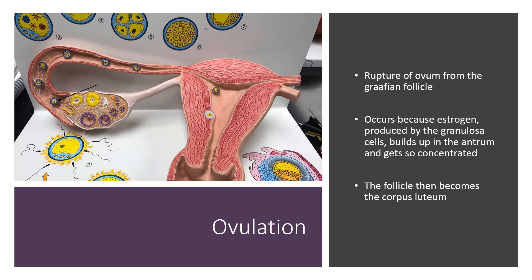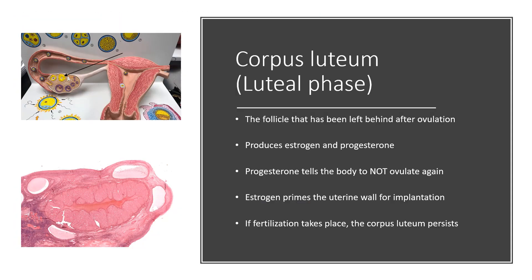The follicle doesn't leave the ovary — it gets left behind and becomes what is called the corpus luteum. Here I have the ovulated ovum, and the corpus luteum is that follicle left behind after ovulation, pointed out on the model. The corpus luteum is very important because it produces estrogen and progesterone. The estrogen primes the uterine wall for implantation, and the progesterone tells the body not to ovulate again. If fertilization takes place, the corpus luteum persists, continuing to produce progesterone and estrogen.